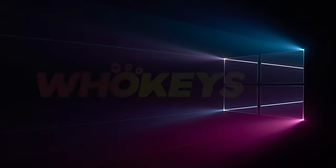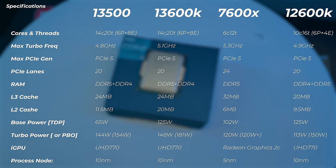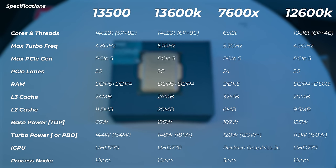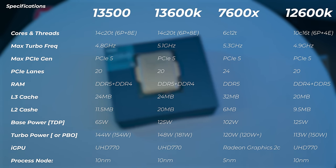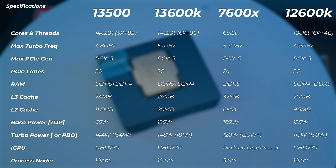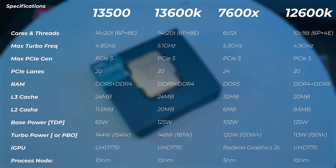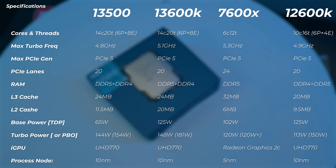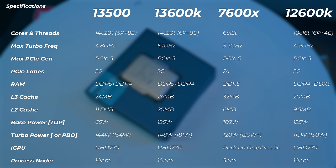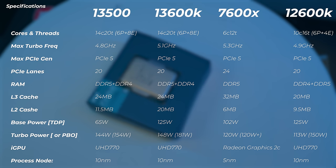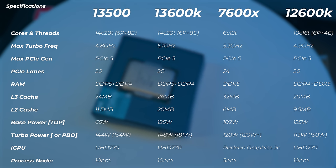Looking at the specs, you can see on paper where this CPU lines up and how it differs from the 13600K, 12600K, and the Ryzen 7600X. The 13500 has 14 cores — six P-cores and eight E-cores — giving 20 threads, which is the same as the 13600K. The 12600K only has 6 P-cores and 4 E-cores, so the 13500 has four extra E-cores. The 7600X has just 6 cores and 12 threads.